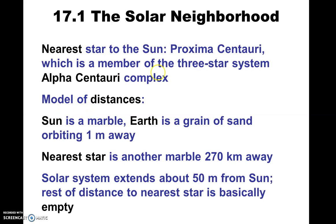It's wonderful to think about the fact that these stars are more than four light years away — it takes light, the fastest thing in the universe, more than four years to cross the distance from Proxima Centauri, Alpha Centauri, and Beta Centauri to reach our telescopes here on Earth. To give you a better sense of that, we'll use a scale model. If the Sun is the size of a marble — just an ordinary small marble — then the Earth is basically like a grain of sand.